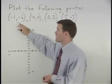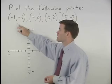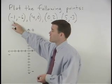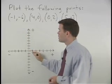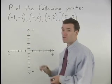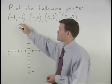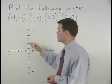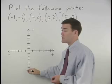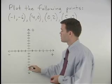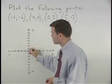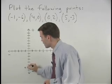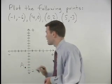So for our first point, negative 1, negative 6: since the x coordinate is negative 1, that tells us we move one unit to the left from the origin. And since the y coordinate is negative 6, that tells us we move 6 units down from the origin. So we go 1 to the left and 6 down, and we can label that point A.